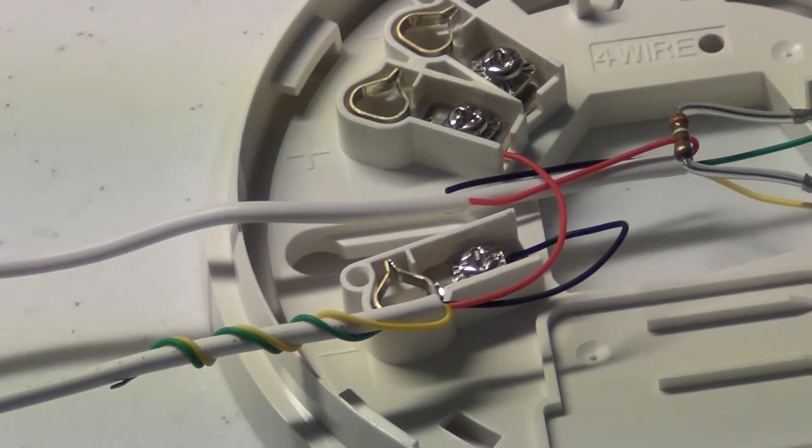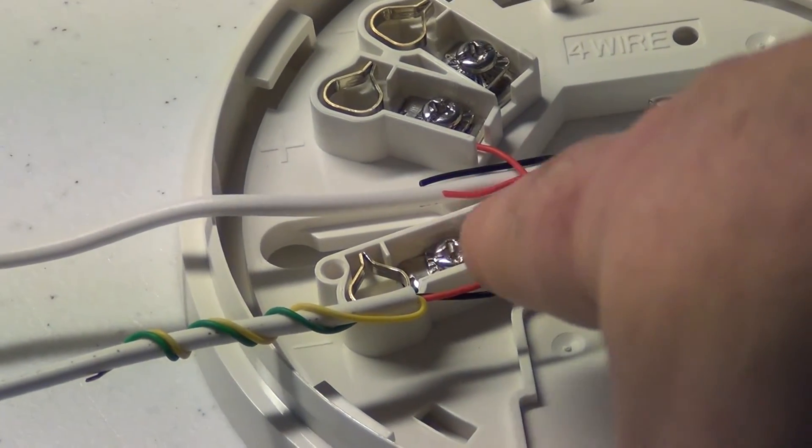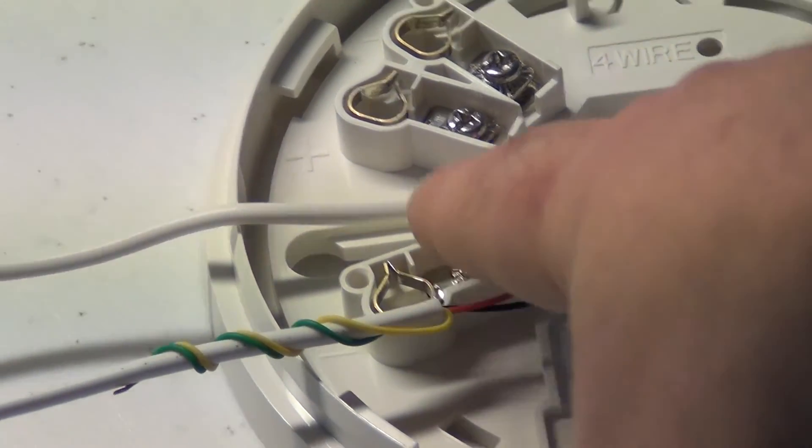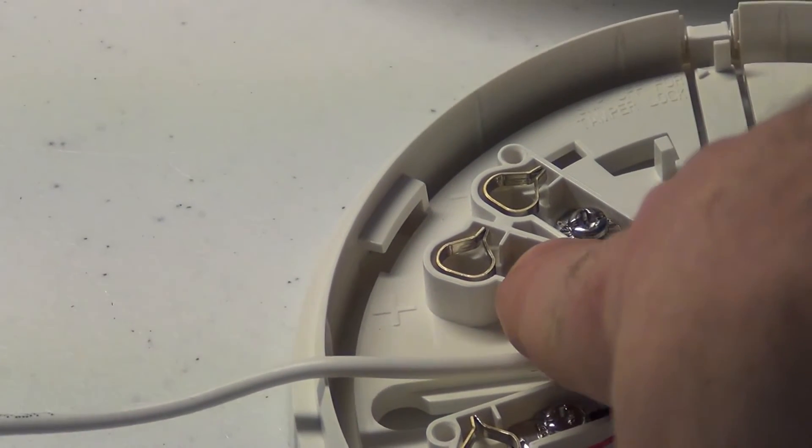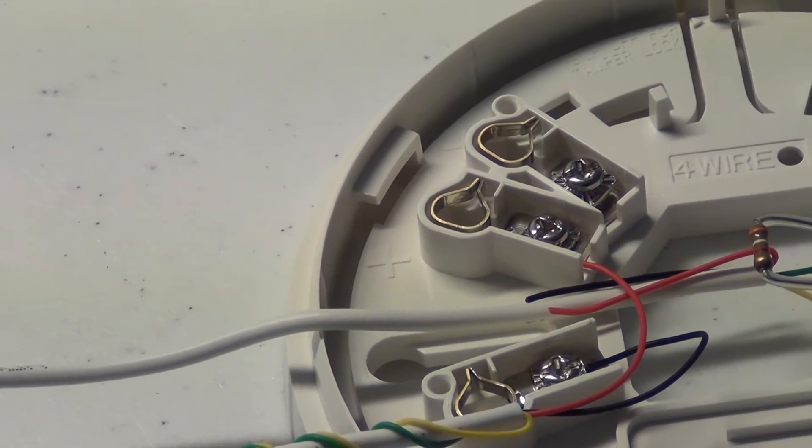The power wires come over here on your first smoke you're going to come in and hook your negative to this post and then you're going to hook your positive to your first positive post in your smoke CO combo unit.